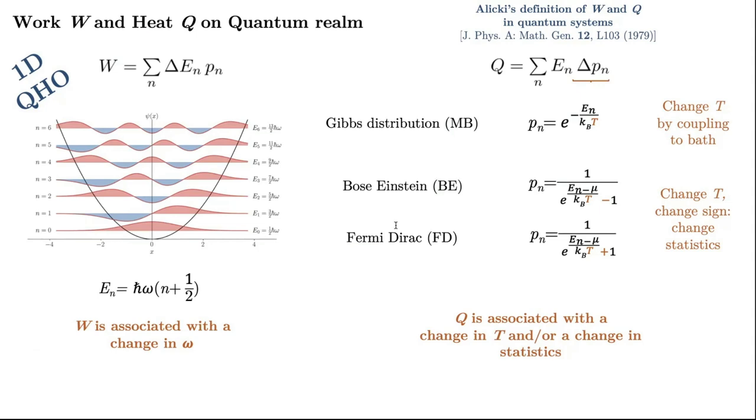In the case of heat, we want to change the population, and if the system follows the Maxwell-Boltzmann distribution, then we have a single parameter here. In order to change the population, which is the temperature, we change the temperature by coupling the system to a bath, and that is the same as in the classical case. But, in the quantum world, particles can be either bosonic or fermionic, and then, if we want to change these occupations, we can, of course, change the temperature, but, in principle, we could also change this sign here from minus for bosons to plus for fermions. So, what we are noticing here is that heat in quantum heat can be associated, of course, with a change in temperature, but could also be associated with a change in statistics.